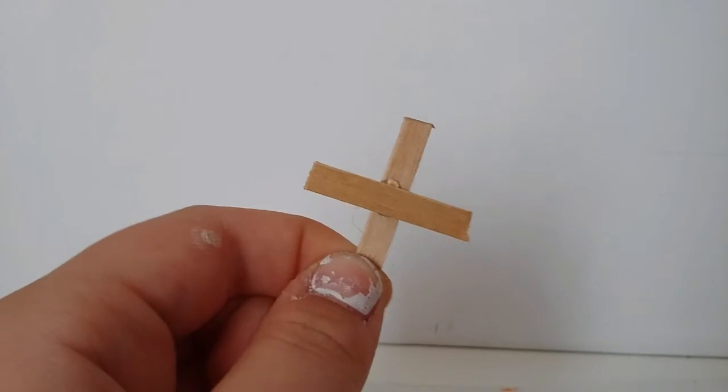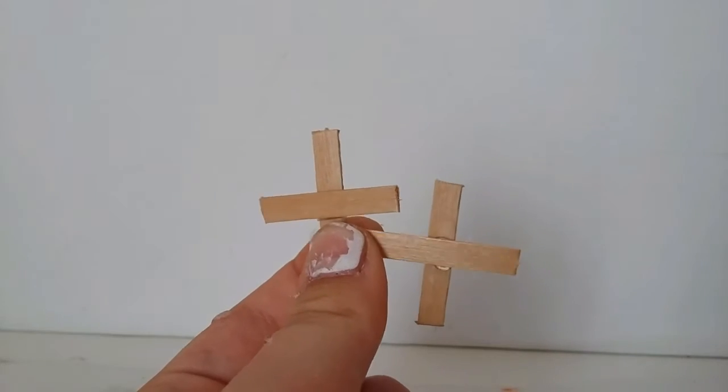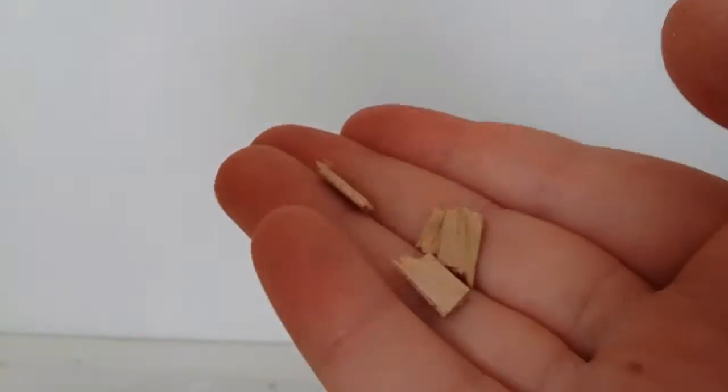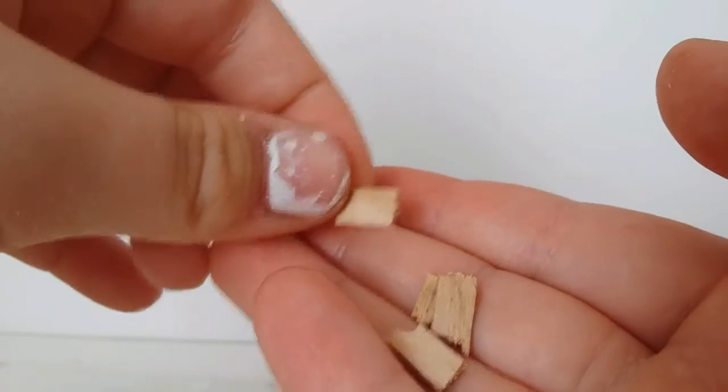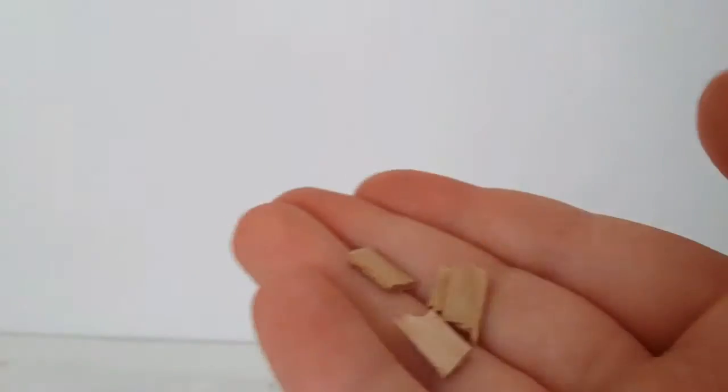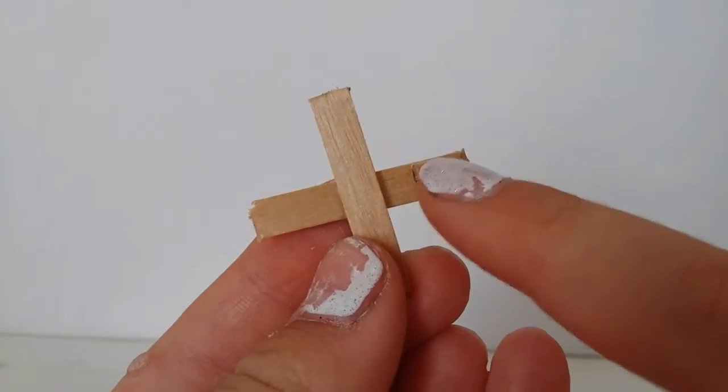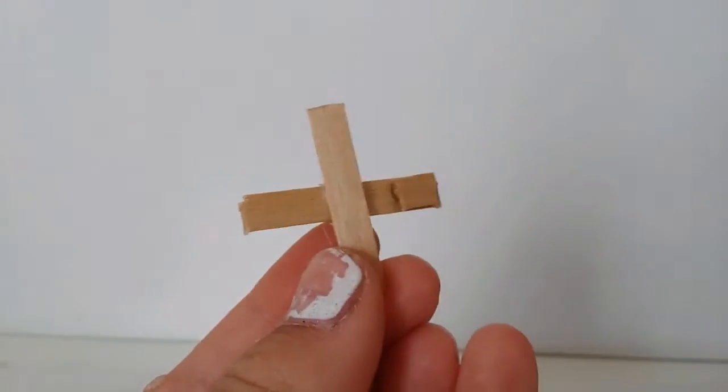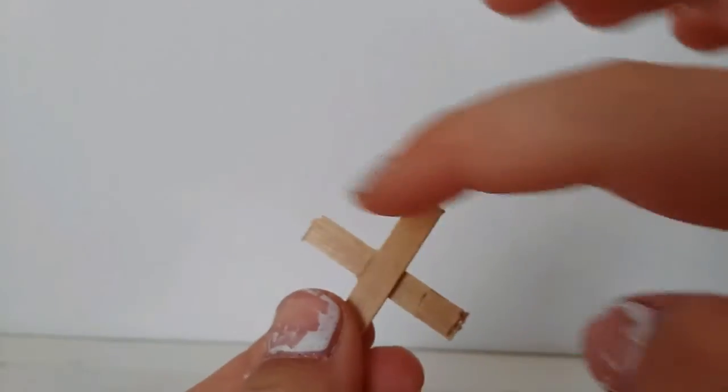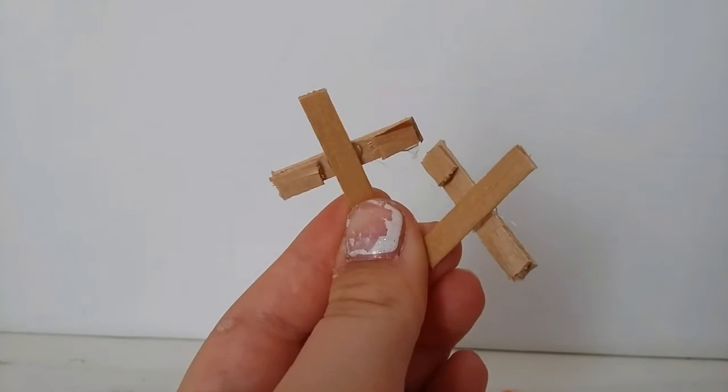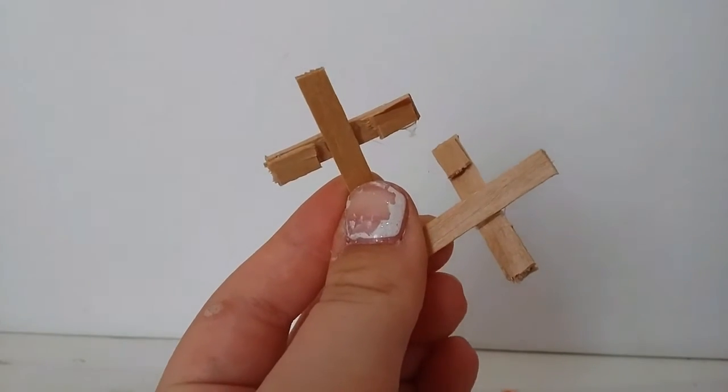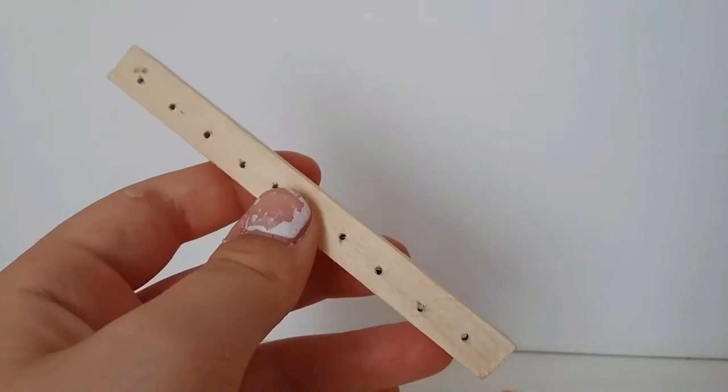Then you just want to cut small random pieces of the same kind of popsicle stick, and you want to glue them where it goes inwards, just on one side, not here but here and here. Then do it to both of the crosses.